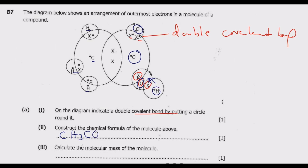This carbon is bonding with one oxygen, then this oxygen bonds with hydrogen. So this gives us the formula of this acid, which is ethanoic acid. Once you do this you are good to go.